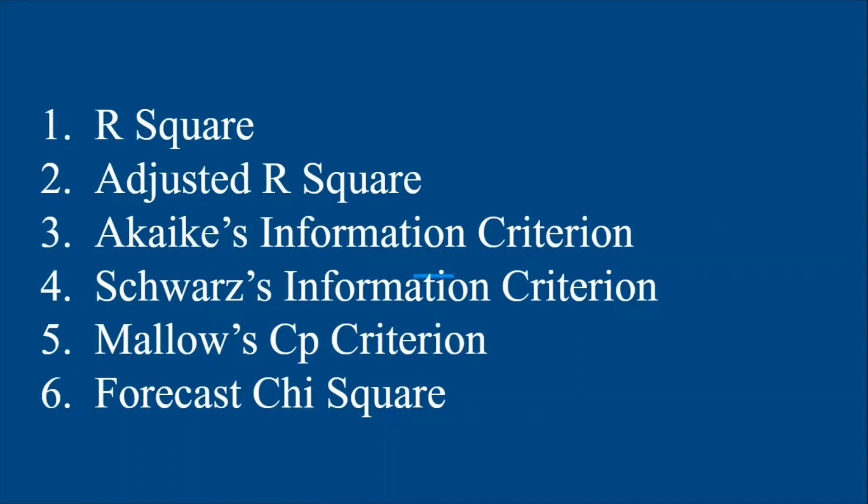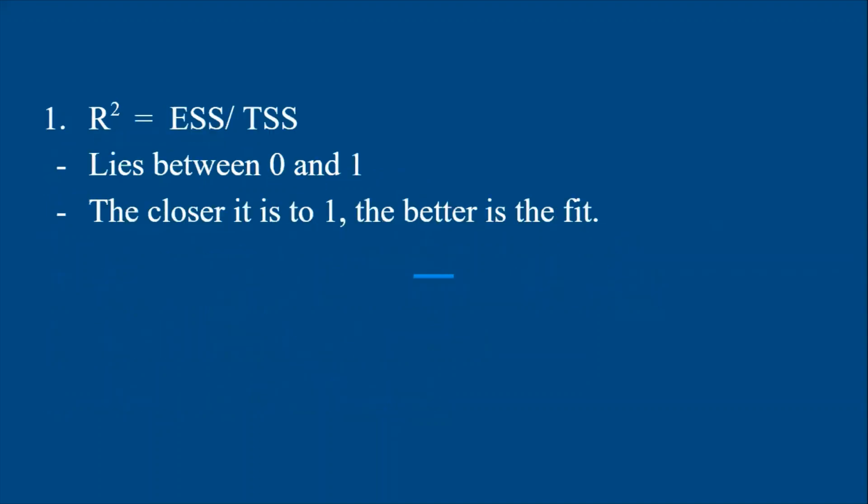Let's begin with R-square. The R-square formula is explained sum of squares divided by the total sum of squares. R-square is one of the measures of goodness of fit of a regression model, and the value of R-square is between zero and one. The closer the value to one, the better is the fit.